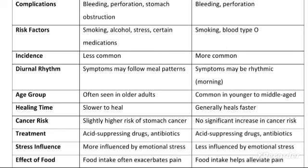Next difference is risk factors. Gastric ulcer ke jo risk factors hain woh hain: smoking, alcohol, stress, and certain medications. Aur jo duodenal ulcer hai, us ke risk factors hain: smoking and blood type O — jin persons ka blood type O hai unme jyada chances hote hain duodenal ulcer ke.